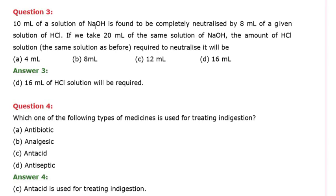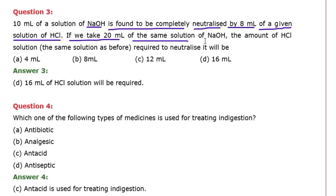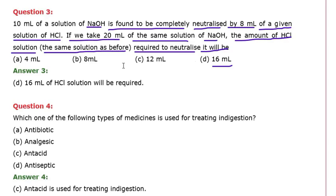Question number three: 10 ml of a solution of sodium hydroxide is found to be completely neutralized by 8 ml of HCl. If we take 20 ml of the same solution of sodium hydroxide, the amount of HCl solution required to neutralize it will be 16 ml. 16 ml corresponds to option D, so the correct option is D.